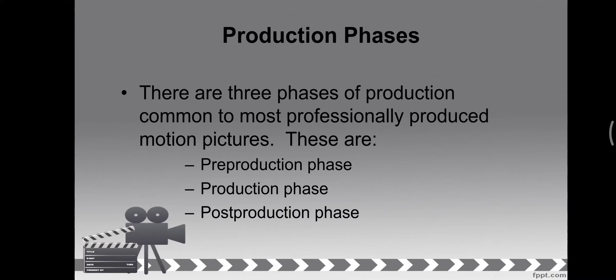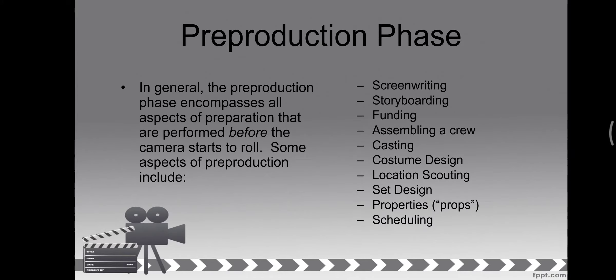These are the production phases. We are going to discuss each phase. There are three phases of production common to most professionally produced motion pictures: the pre-production phase, production, and the post-production phase. It's easy to remember since this is a process — they just follow in order.